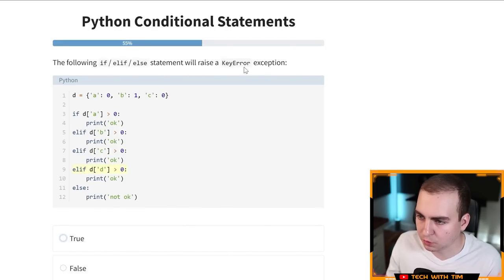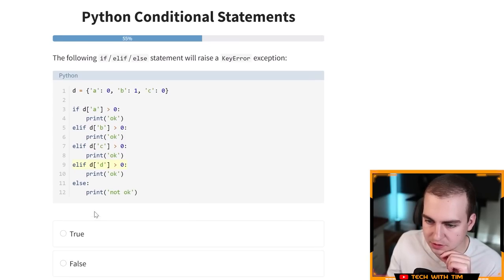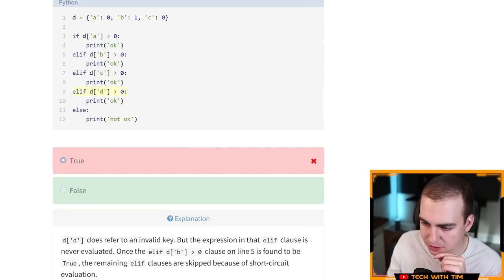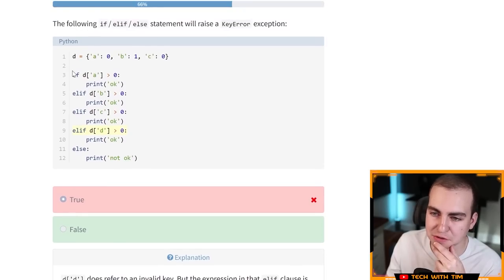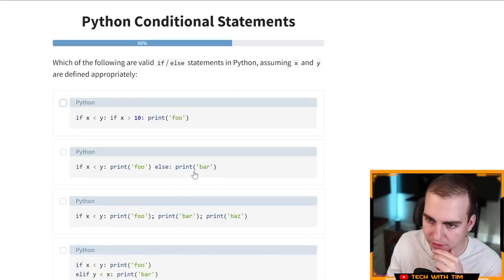The following if L, if L statement will raise a key error exception. If D yes. So if D is not in the dictionary, then it will raise an exception. You have to use dot get. So that's true. What if D does not refer to an invalid key, but the expression in that LF clause never. Oh, I didn't even consider the fact that it's not going to execute. Okay. That makes sense. I should have read the whole thing. Okay. Next question. That's why you don't rush, I guess on the quizzes.